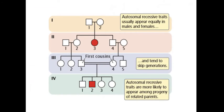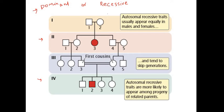Let us discuss the pedigree chart. Whenever we see a chart, we must first determine whether it is dominant or recessive. In the case of dominant disorders, the disease phenotype appears in every generation. Here we can see that disease phenotype is present only in generation 2 and generation 4 — a generation is being skipped — so this cannot be dominant; it is a recessive disorder.